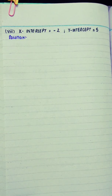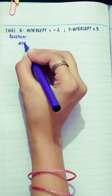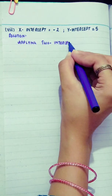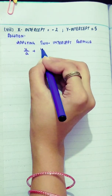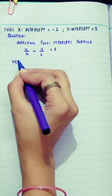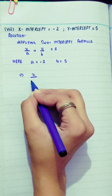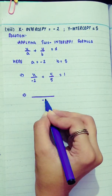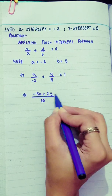Part 8: x-intercept equals minus 2 and y-intercept equals 5. We will apply the two-intercept formula: x over a plus y over b equals 1. Here a is minus 2 and b is 5, so x over minus 2 plus y over 5 equals 1.